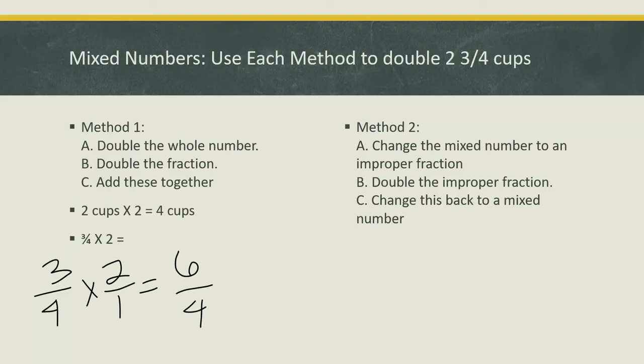I notice that's an improper fraction. I need to change that into a mixed number. Four goes into six one time. So I have one as a whole number. Then I still have two-fourths left. I can reduce two-fourths. They're both divisible by two. That equals one and one-half.